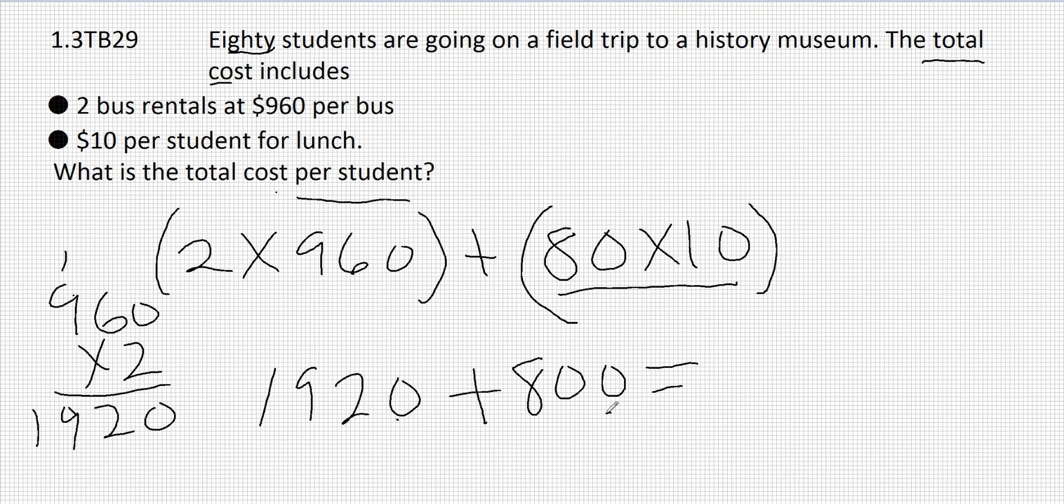So 0 plus 0 is 0, 0 plus 2 is 2, 8 plus 9 is 17, carry the 1. And we end up with $2,720 being the total cost.